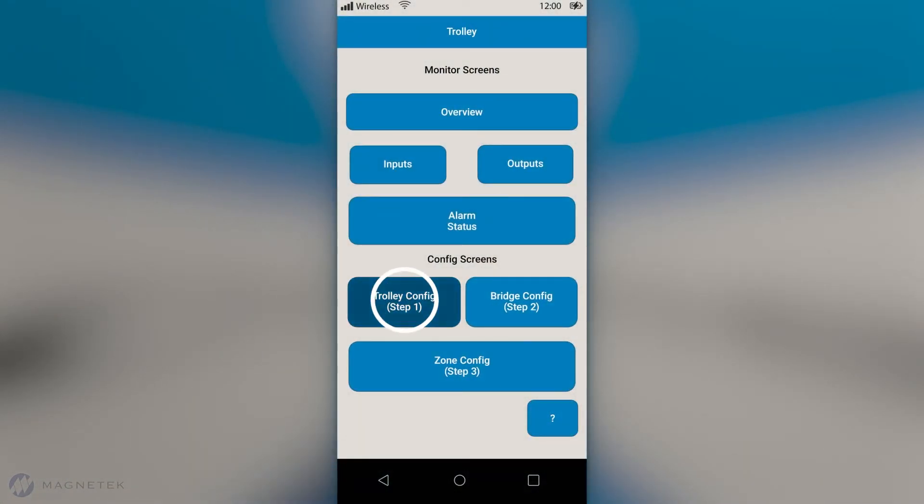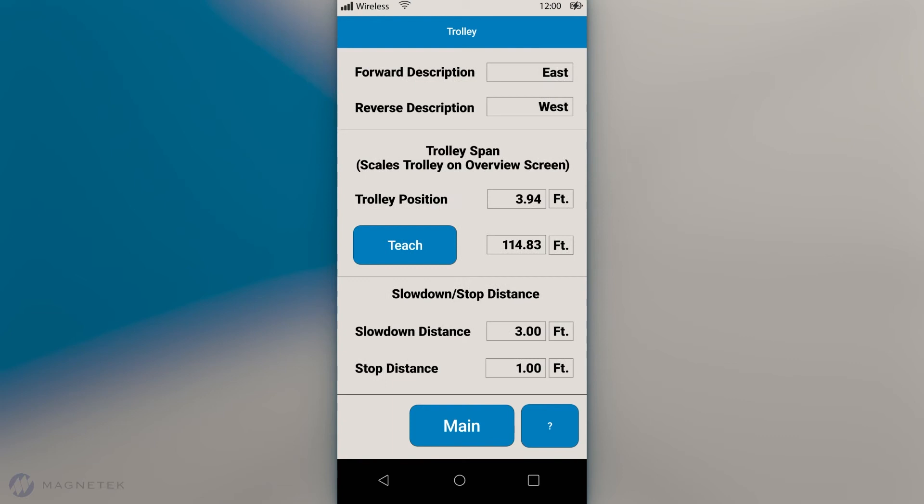All you need is a laptop, smartphone, or tablet, and you're ready to enable configurations right from the plant floor.